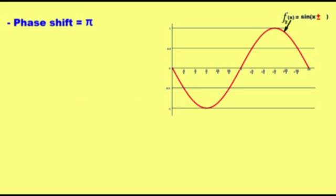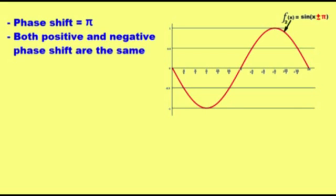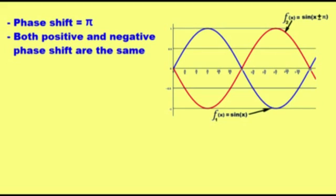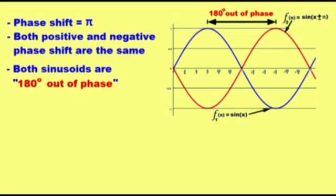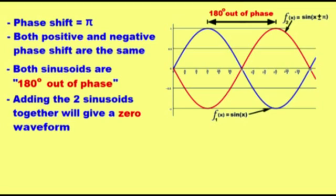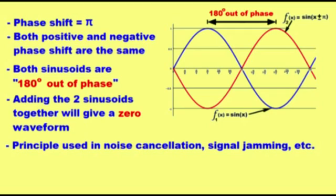Next I will show you a unique case of phase shift. In this unique case, the amount of phase shift is equal to pi. For a phase shift of pi, both positive and negative phase shift are the same. When we add the sine wave without phase shift into one graph, we say both sinusoidal waveforms are 180 degrees out of phase. If we add the two sinusoidal waveforms together, we get a zero waveform. This principle is used in many applications like noise cancellation, signal jamming, etc.